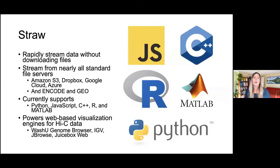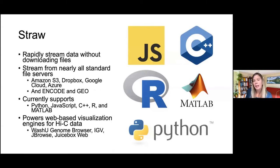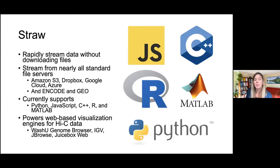We also have Straw, the API I mentioned earlier, for rapidly streaming data without downloading files. You can stream from any server. We have Python, JavaScript, C++, R, and MATLAB versions of Straw, and Jupyter notebooks showing simple analyses on Hi-C files using Straw. The JavaScript version powers web-based visualization engines for Hi-C data, including the WashU Genome Browser, IGV, JBrowse, and of course Juicebox on the web.